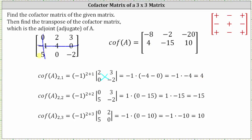Cofactor A sub two comma two is equal to negative one raised to the power of two plus two times the corresponding minor. If we eliminate row two, column two, we have a two by two determinant where row one is zero, three and row two is five, negative two. The fourth power of negative one is one. The determinant is equal to zero minus 15, or negative 15. One times negative 15 is negative 15, the entry for row two, column two.